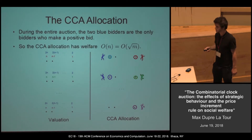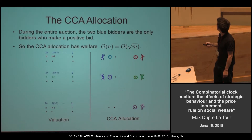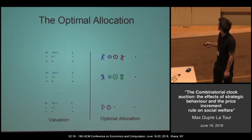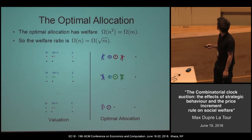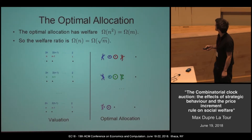All the row bidders get their least favorite item. The optimal allocation gives everything high value, which is about M welfare. So the welfare ratio is about root M.